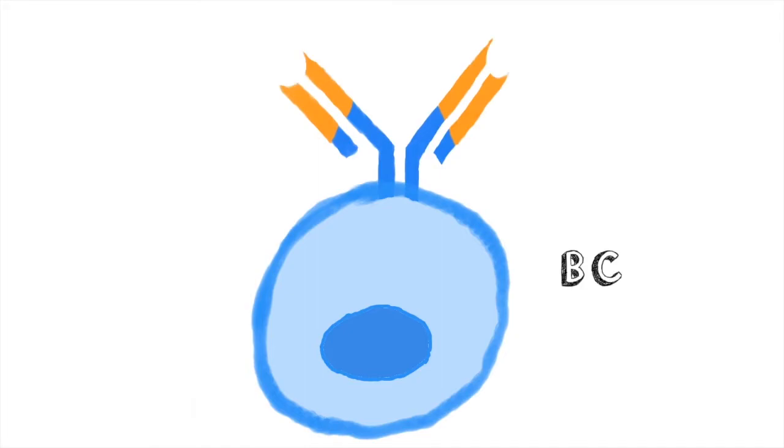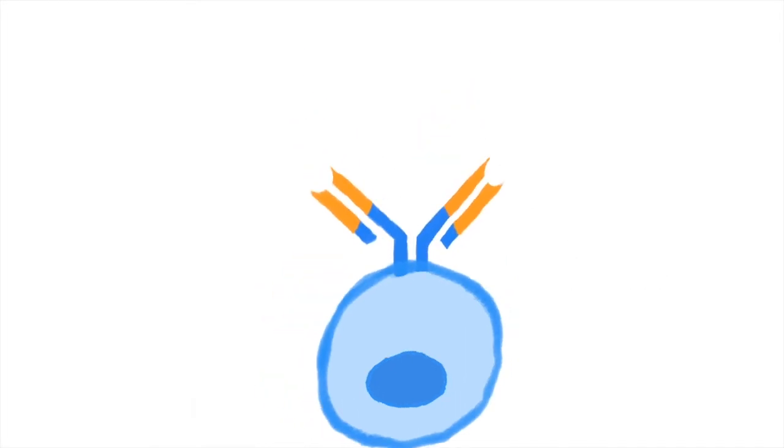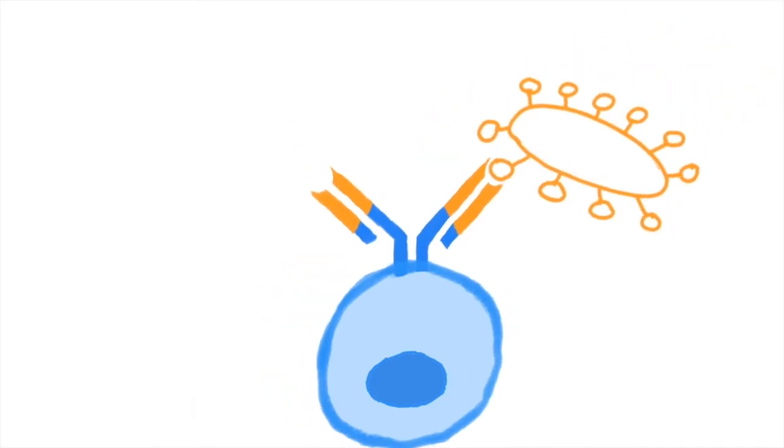Antibodies are produced by B cells. B cells circulate throughout the body waiting to find the antigen to which their specific antibody binds.